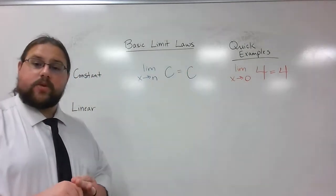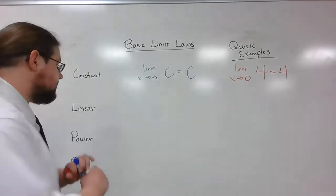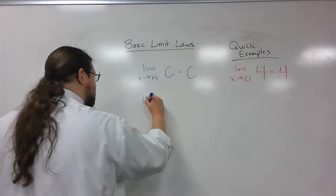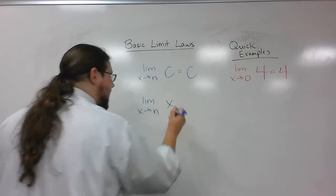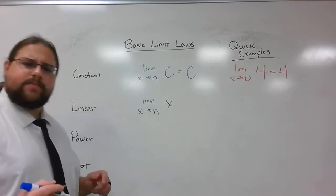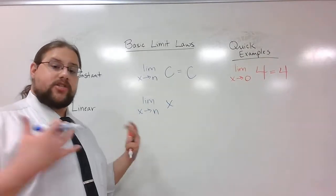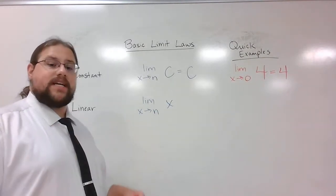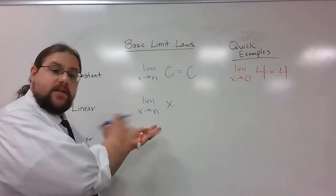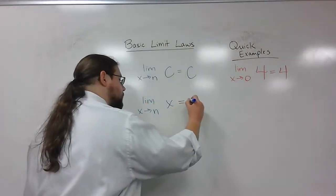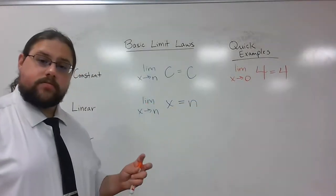Now, let's look at the linear one. If I'm trying to find the limit as x approaches some number of just an x, well, think about it. That is literally just a straight line. It is a slope of 1, a y-intercept of 0. It's whatever you plug in n for.